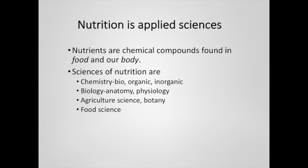Nutrition is a collection of applied sciences — it's not just one specific thing. It includes chemistry because nutrients are all chemical compounds found in our food and in our bodies. It is also biology because we talk about anatomy and physiology and the ways that our body digests and absorbs these nutrients and turns them into usable material.